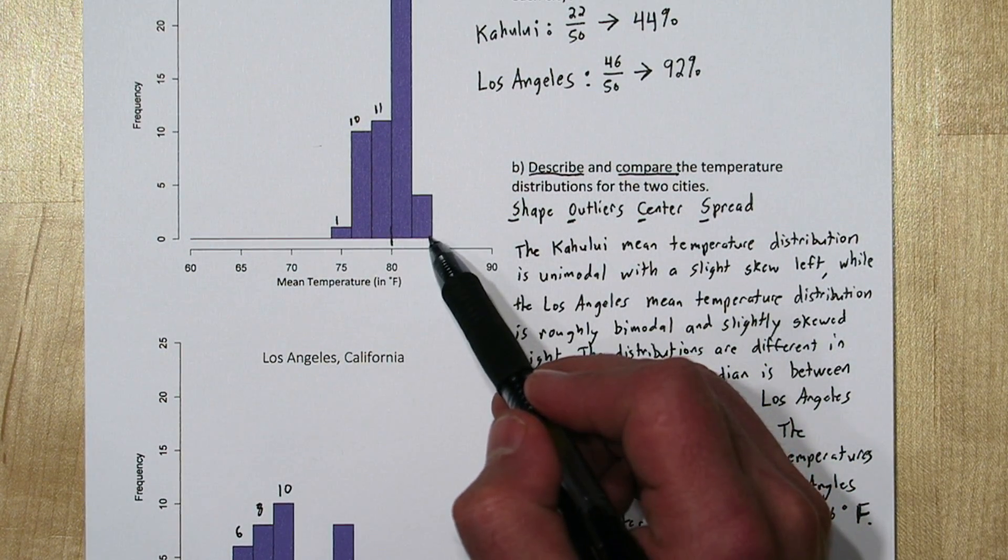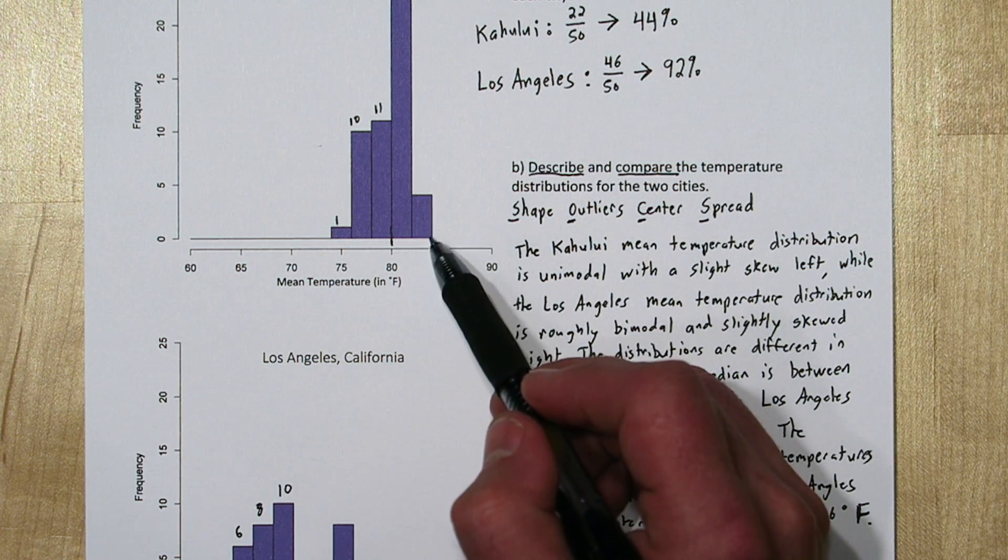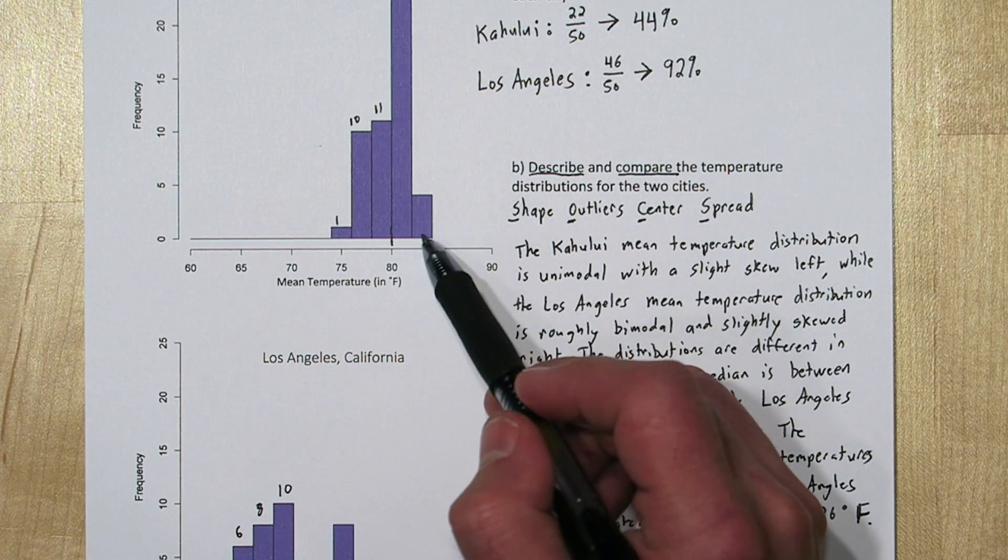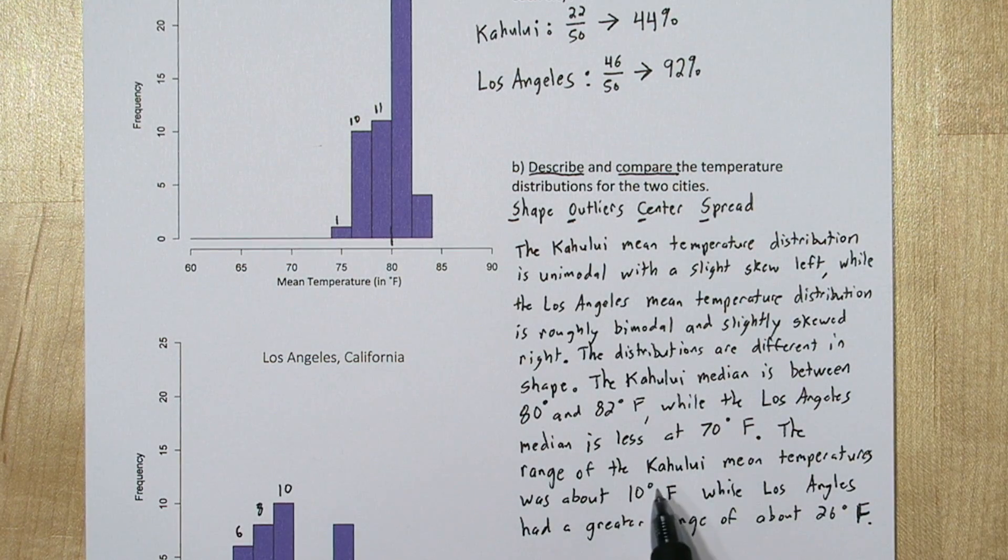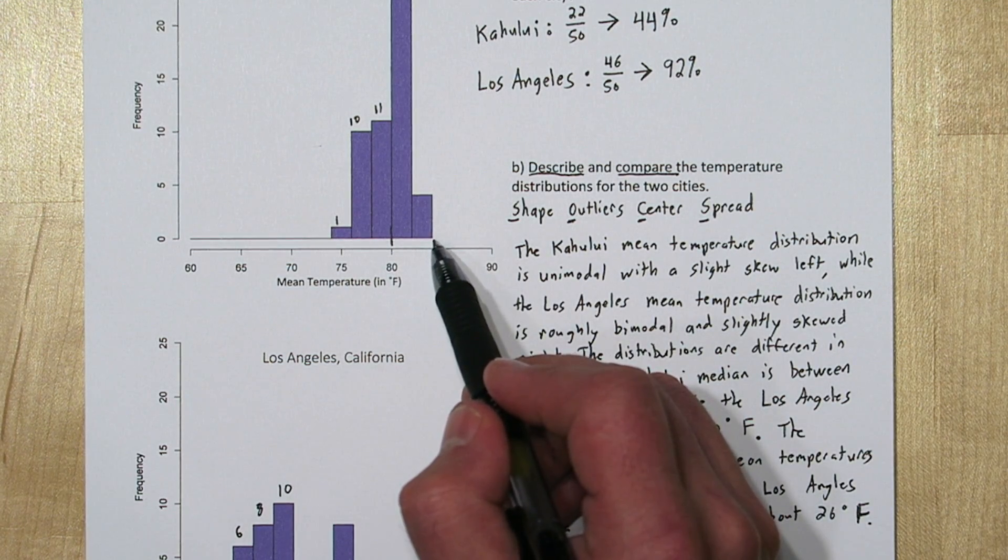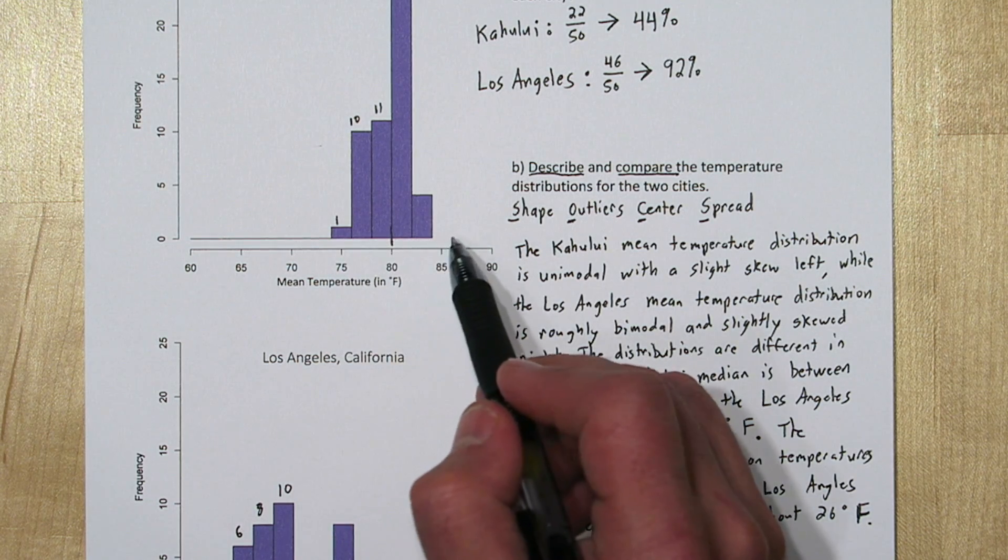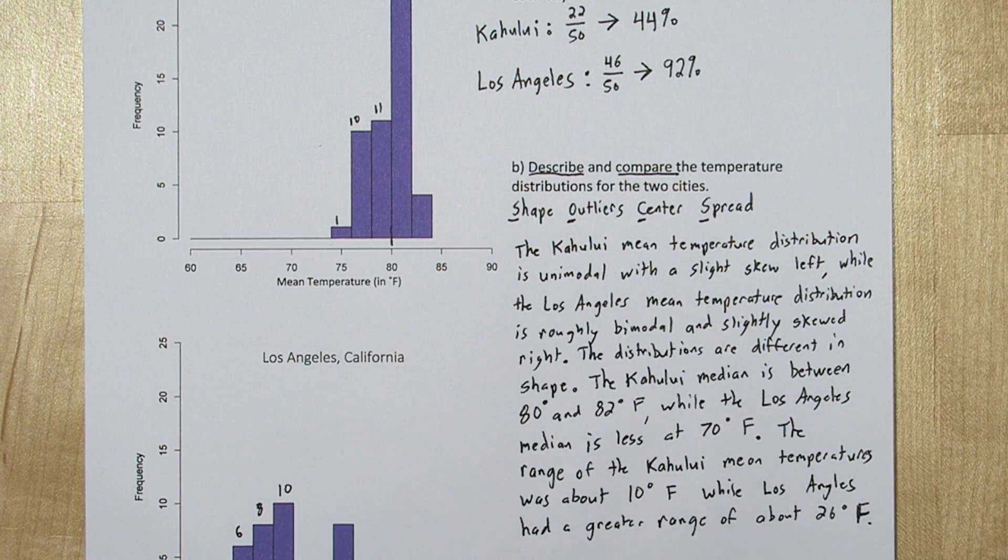For Kahului, it looks like our maximum mean temperature was 84 degrees, or maybe it was 83 degrees. We can't really tell from this histogram. That's why we have to use the word about. But let's say it's 84 and the minimum was 74. That would give it a range of 10, because 84 minus 74 is 10.